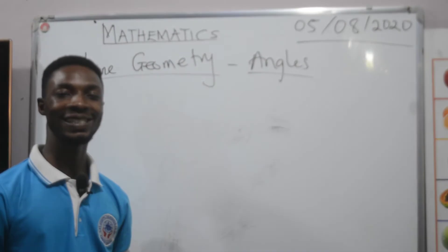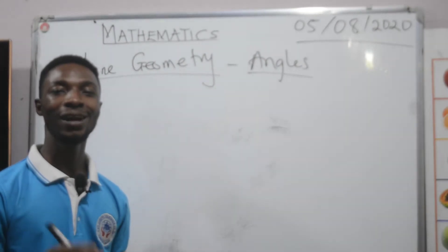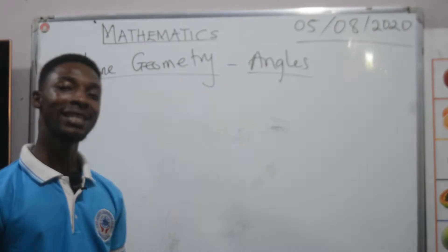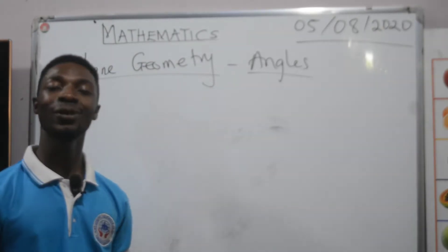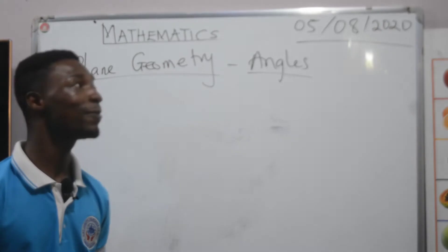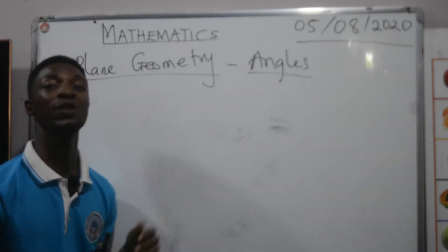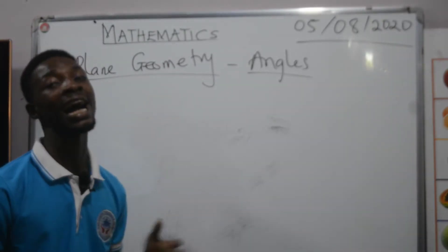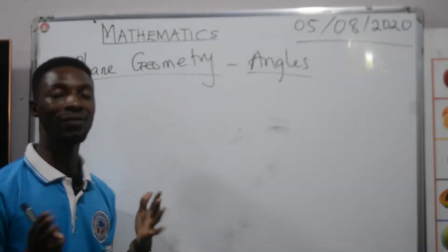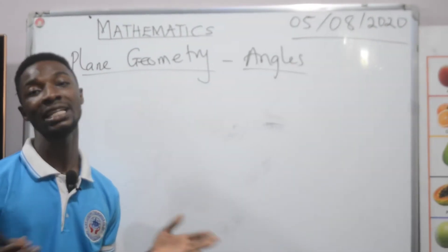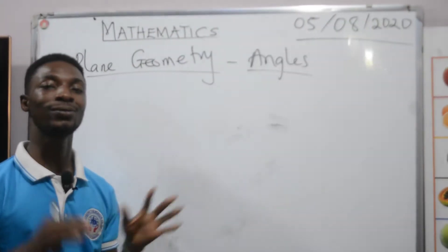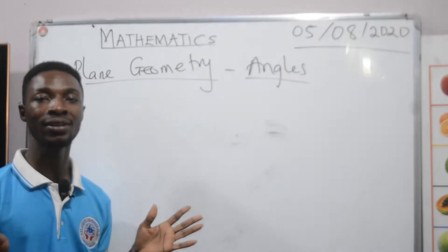Hello students, welcome to another lesson on OKE Learning Program. Today I'm going to take another lesson on Grade 4 Mathematics. In this lesson we are going to learn plane geometry, specifically angles. We are going to learn different types of angles and how to identify them.